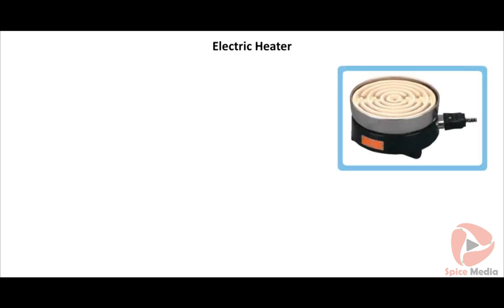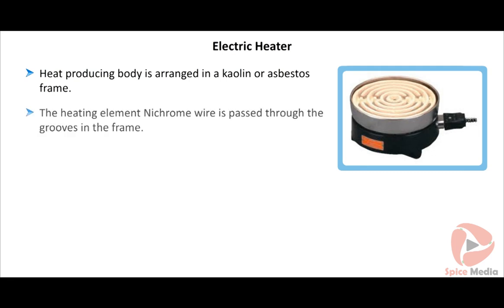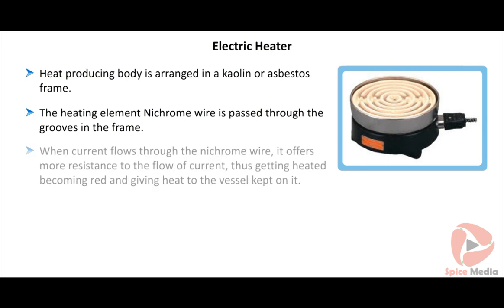In the electric heater, the heat-producing body is arranged in a kaolin or asbestos frame with a number of grooves. The heating element — nichrome wire — is passed through the grooves in the frame. When current flows through the nichrome wire, it offers more resistance to the flow of current, produces heat, and becomes red. This heat is supplied to the vessel kept over the frame.